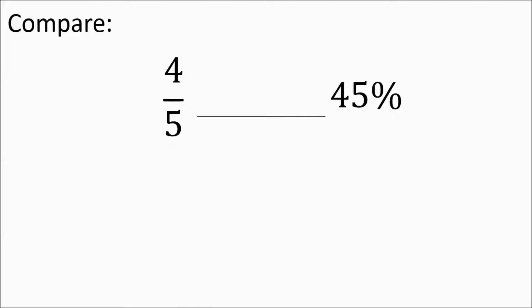In this first example we're going to compare two numbers: four-fifths and 45 percent. Some people might say they're equal because they have the same digits, but do not judge a number by its digits. Get them both into decimal form. For four-fifths, you can divide 4 by 5, or just double the numerator to get eight-tenths. 45 percent becomes 45 hundredths by sliding the decimal two places to the left.